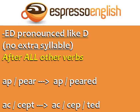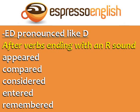Don't pronounce it APPEARED with three syllables. This is different from the verb ACCEPT — the past of ACCEPT is ACCEPTED. ACCEPT has two syllables and EXCEPTED has three. ED is pronounced like D with no extra syllable after verbs ending with an R sound.